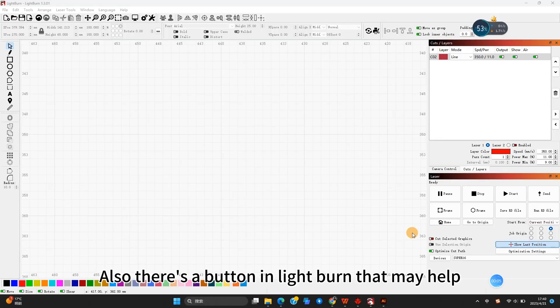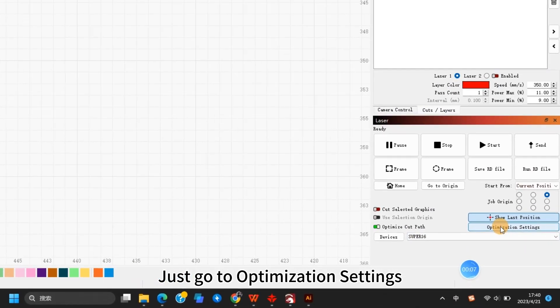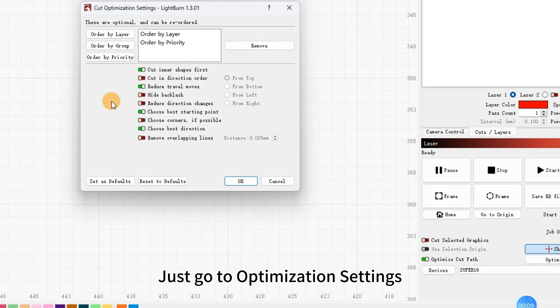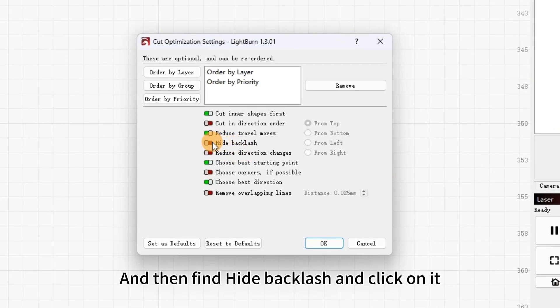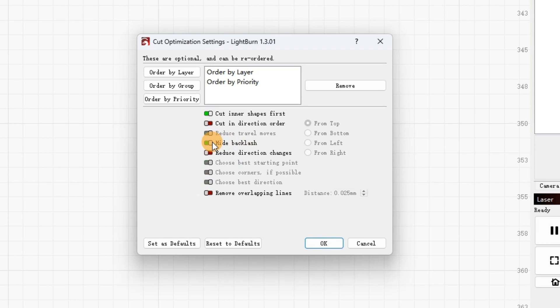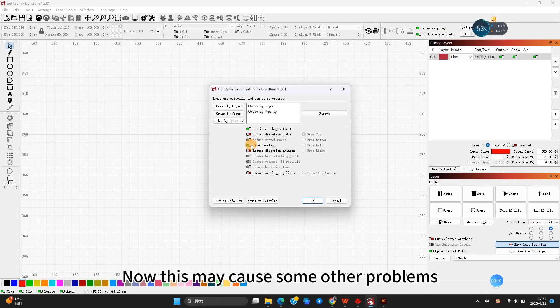Also, there's a button in Lightburn that may help. Just go to optimization settings and then find hide backlash and click on it. Now, this may cause some other problems, so be careful when you're using this function.